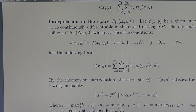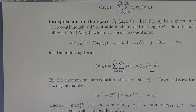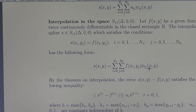Indeed, if (x, y) equals the node (x_i, y_j), then the coordinate Psi_{i,j} equals one at that node and the others are zero. So S(x_i, y_j) equals the value of the function at x_i, y_j, and the interpolating condition holds.